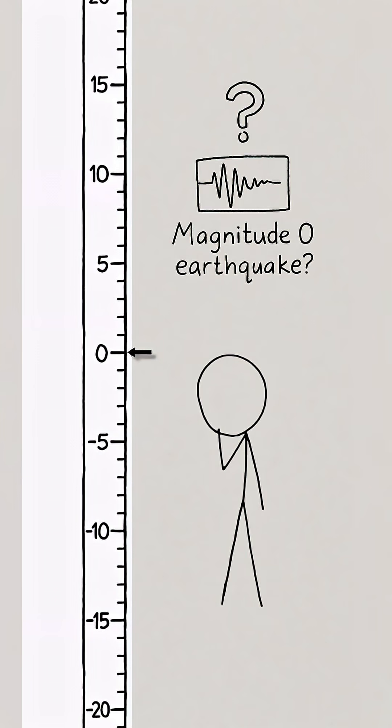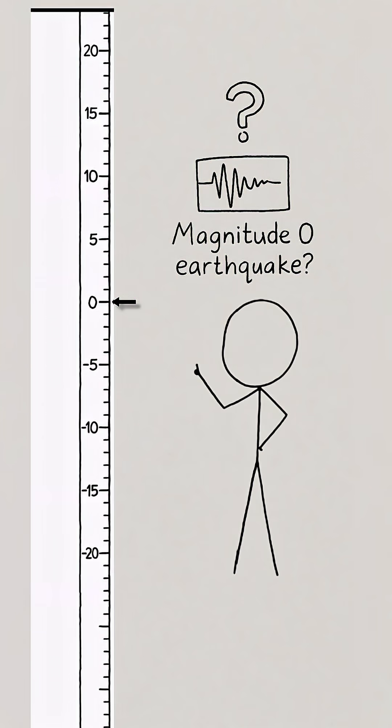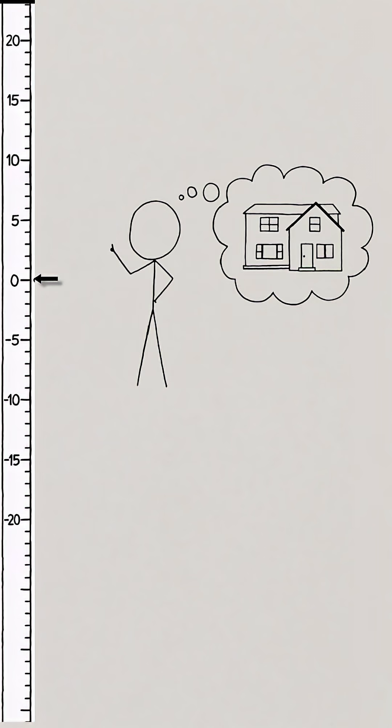Is there such a thing as a magnitude zero earthquake? Yes. In fact, the scale goes all the way down past zero. Let's take a look at some low magnitude earthquakes with a description of what they would be like if they hit your house.